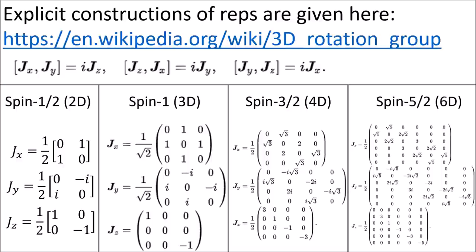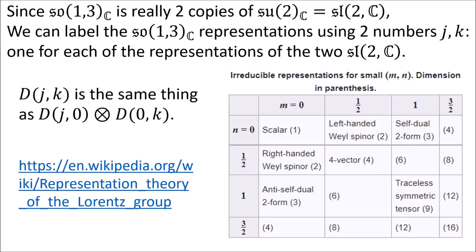And since the complexified Lorentz Lie algebra splits into two copies of the complexified 3D spin Lie algebra called the left and right representations, we can create many different representations for the Lorentz group using different spin numbers for the left and right components.